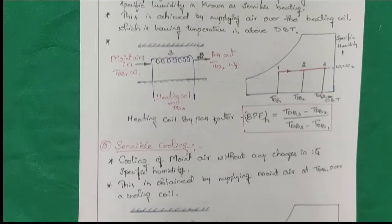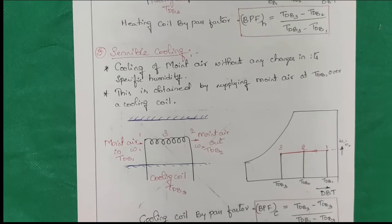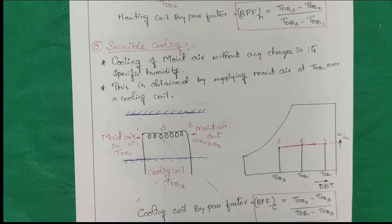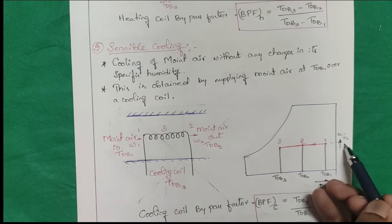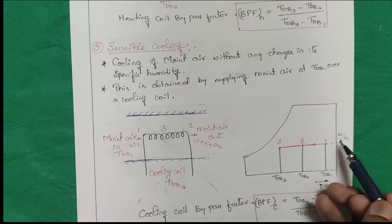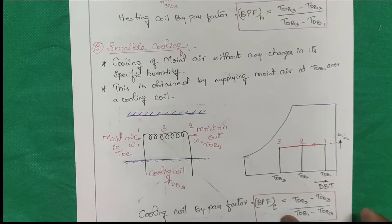What is sensible cooling? Sensible heating means you increase the temperature. Sensible cooling means you reduce the temperature. To reduce the temperature, you use a cooling coil. Both sensible heating and sensible cooling take place at constant humidity. This is the bypass factor formula for sensible cooling.